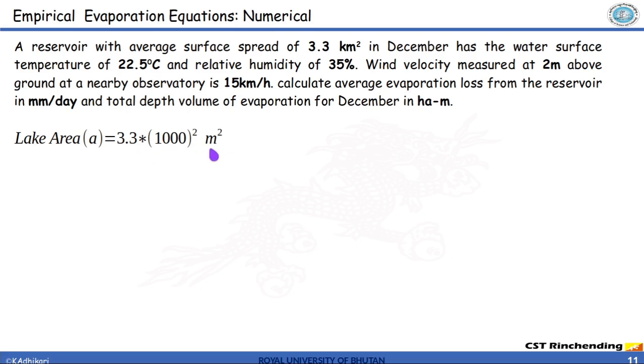Likewise, temperature is given 22.5 degree centigrade. Relative humidity is given 35 percent and the velocity at 2 meter, U2 means the velocity at height of 2 meter is given as 15 km per hour.